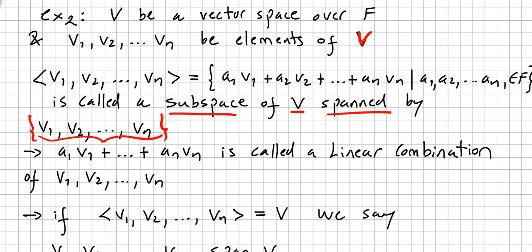For spanning we use the span notation. Every time we compute a scalar times a vector, A1·V1 + ... + An·Vn, this is called a linear combination of these vectors. We are linearly combining the vectors.